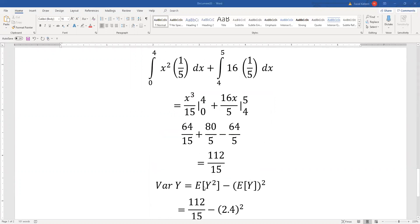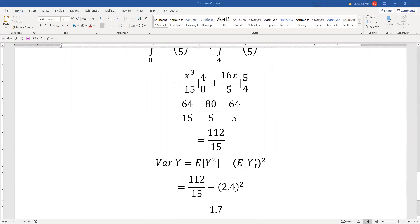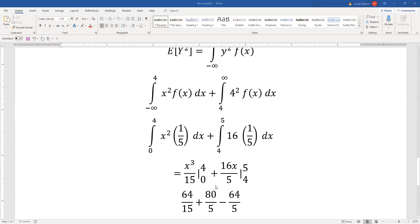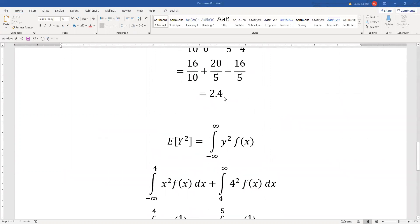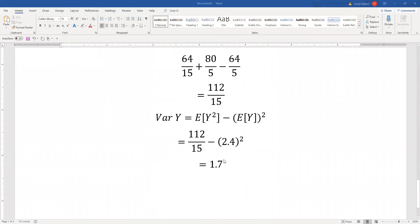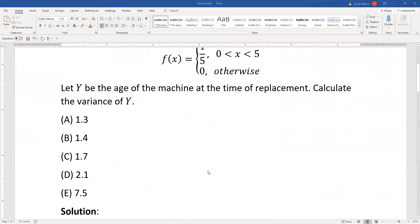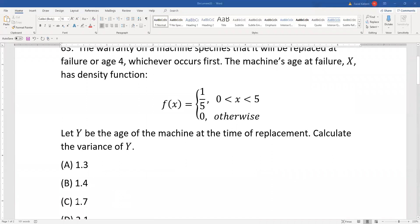The variance of y will be E[y²] minus E[y] squared. E[y²] is 112 by 15, and E[y] we already calculated was 2.4. So minus 2.4 squared, that's 1.7, which is choice C.